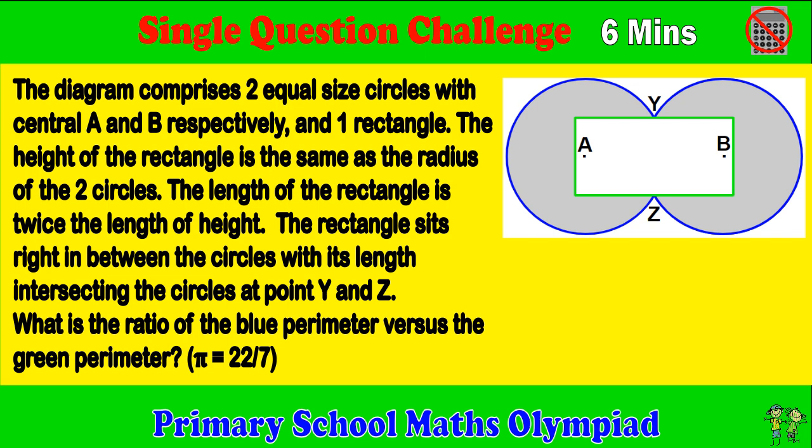The diagram comprises two equal sized circles with central A and B respectively, and one rectangle. The height of the rectangle is the same as the radius of the two circles. The length of the rectangle is twice the length of height.